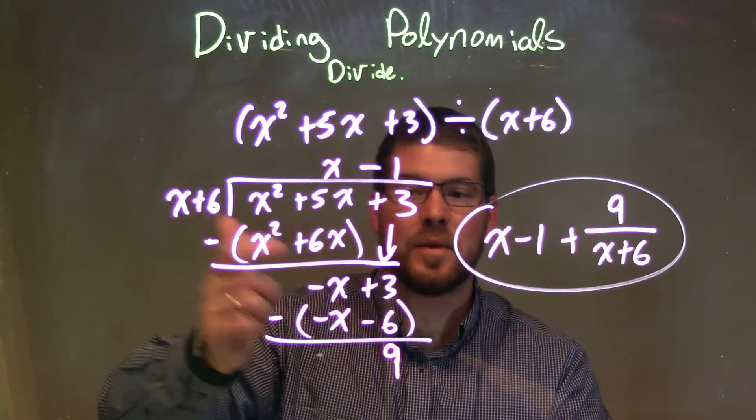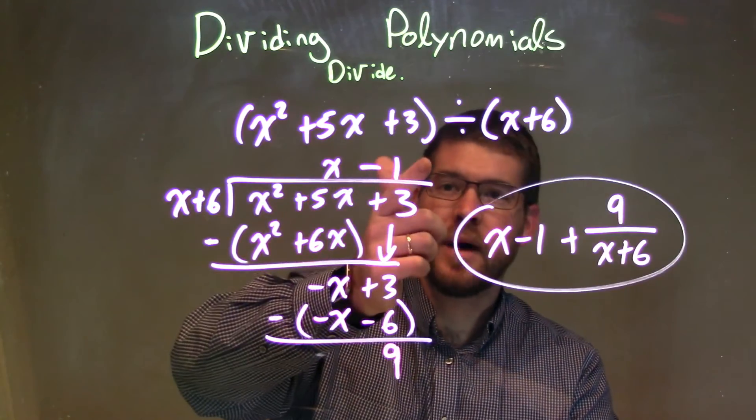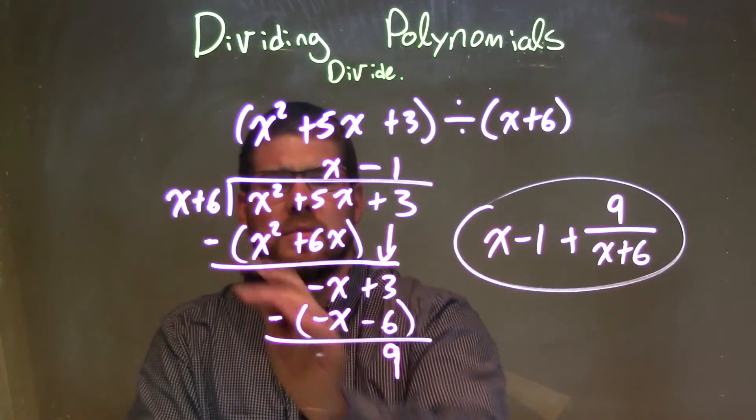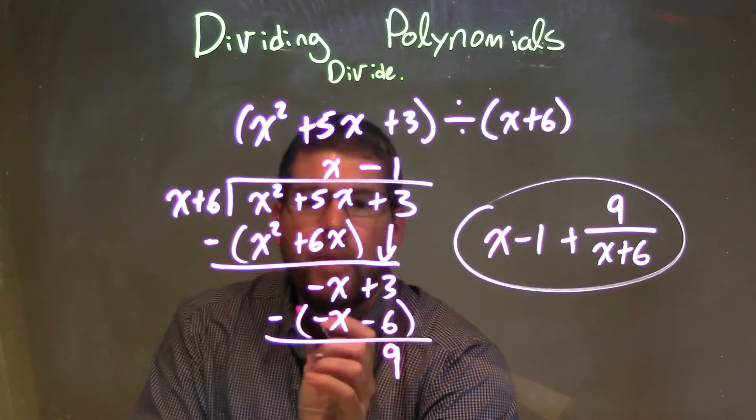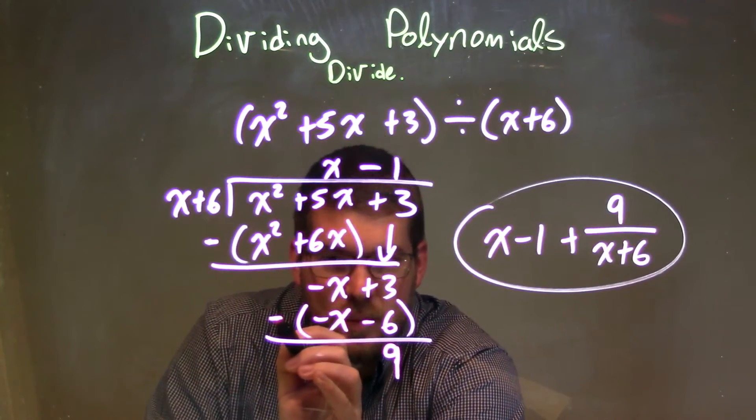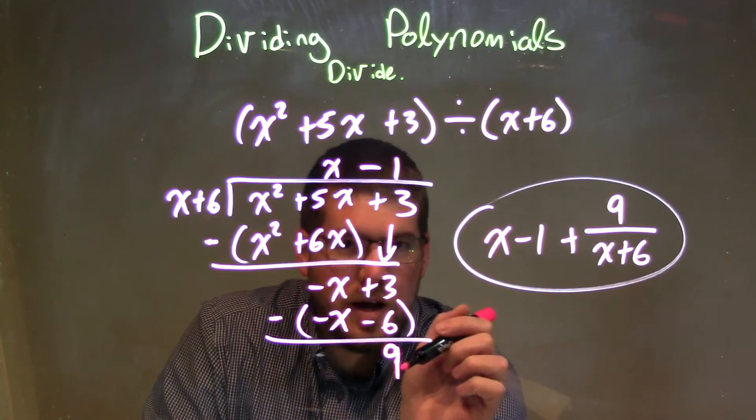Then I said, what times x gives me a negative x? That's a minus 1. Negative 1 times x is a negative x. Negative 1 times 6 is a negative 6. Subtract the two, but when I subtract the two, I'm going to distribute that minus sign to both parts, I end up with a positive 9.